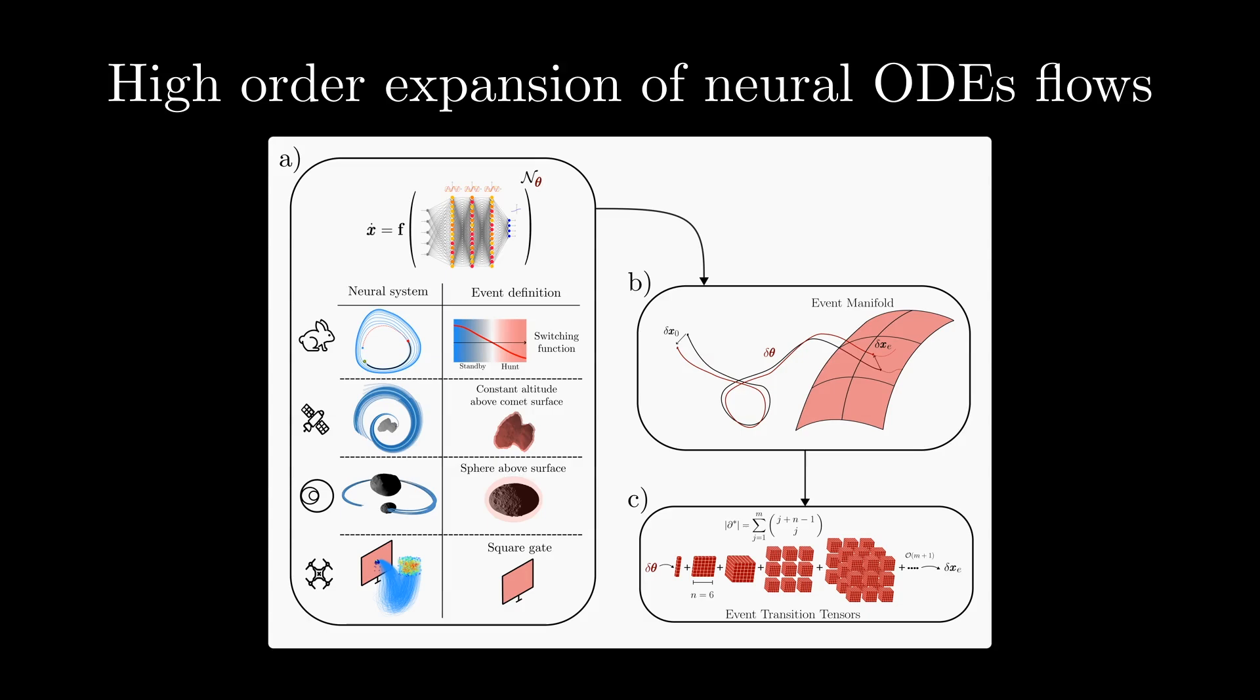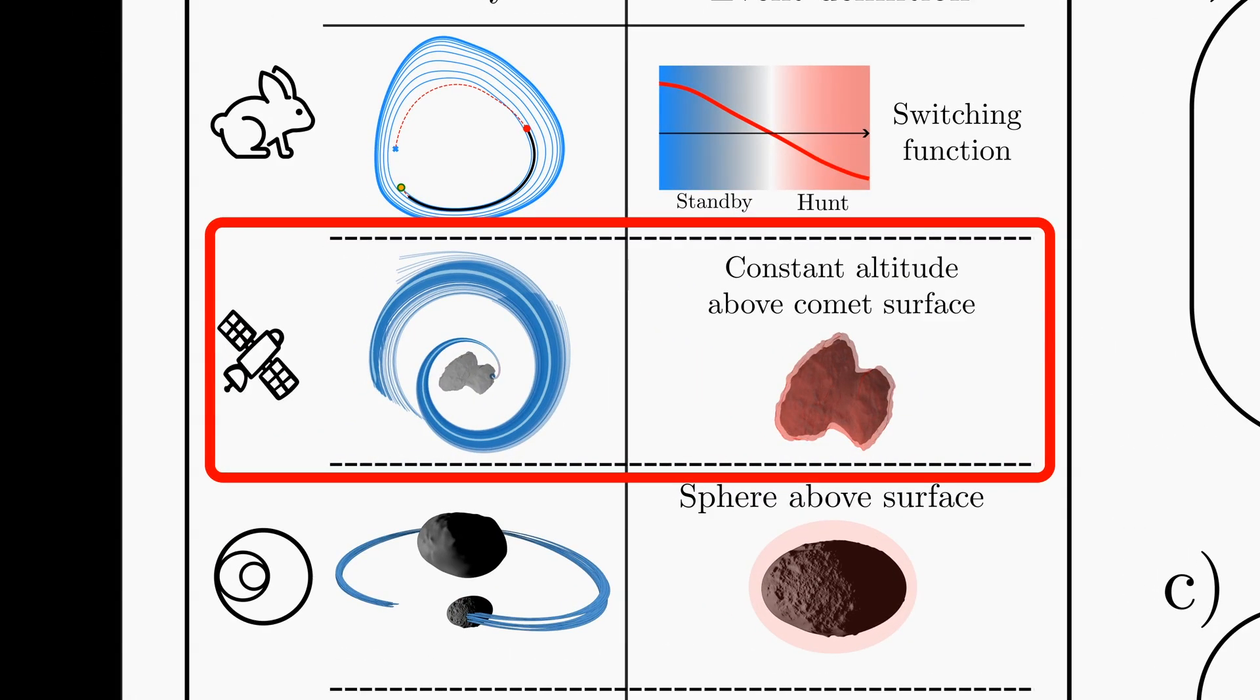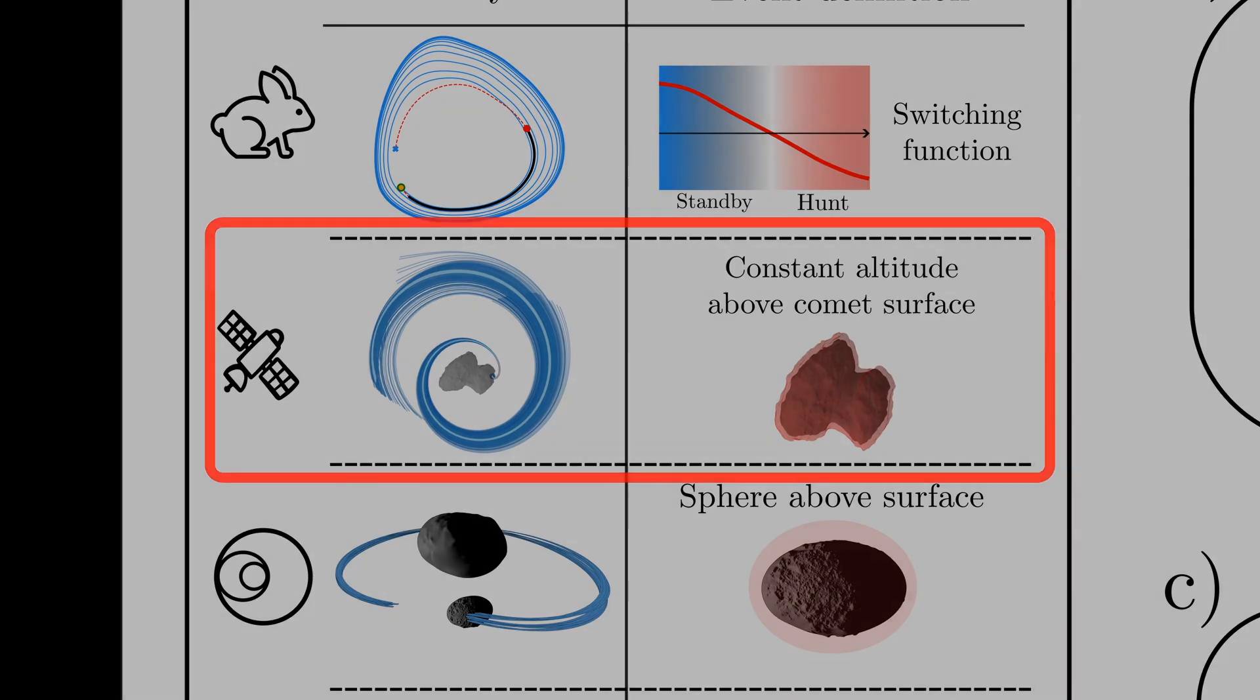Before this gets too abstract, let's illustrate these event transition tensors in the case of the neural-controlled landing on a comet. Let's consider a mission described by the following optimal control problem. A spacecraft needs to perform a mass-optimal pinpoint landing on the comet 67P Churyumov-Gerasimenko.